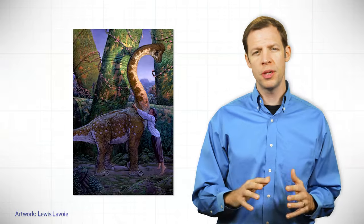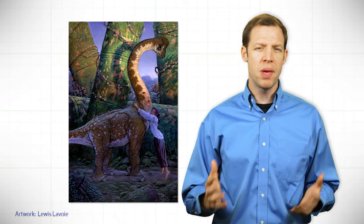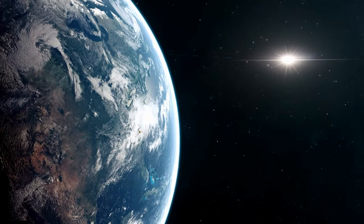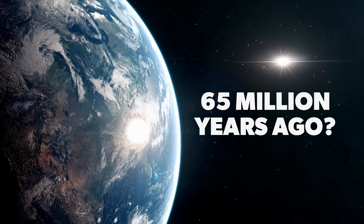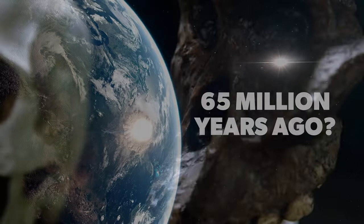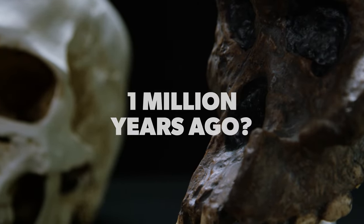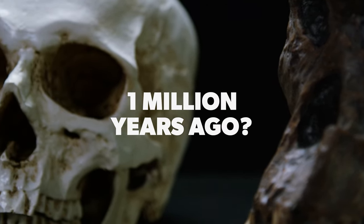In fact, they teach that dinosaurs and humans were separated by millions of years. They teach that dinosaurs died out about 65 million years ago and that humans evolved in some shape, form, or fashion about a million years ago. And so most of the teaching on dinosaurs says that humans and dinosaurs were separated by over 60 million years.